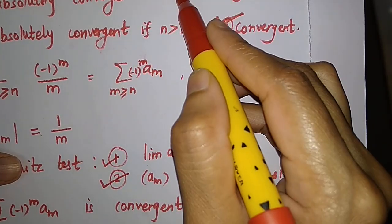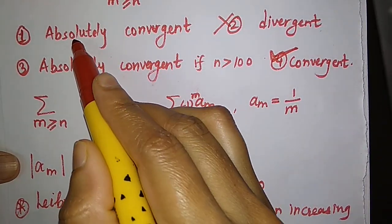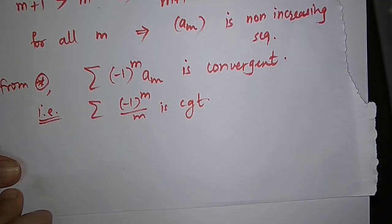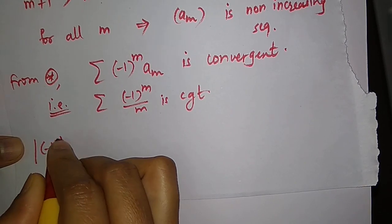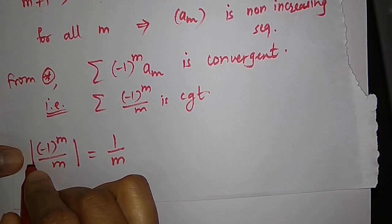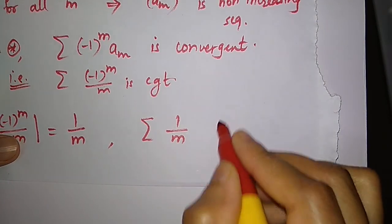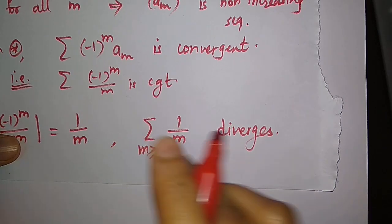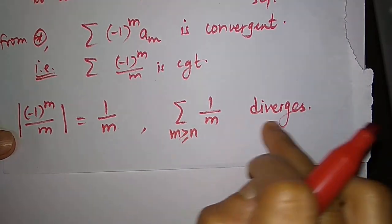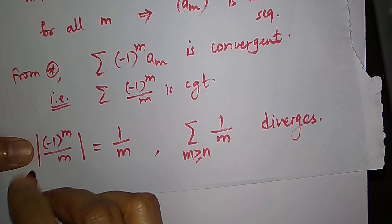Since the series is convergent, it cannot diverge, so the divergent option is false. Now we need to check whether it is absolutely convergent. Taking the modulus: |(-1)^m / m| = 1/m, since |(-1)^m| = 1 for any m. We know that the series sum of 1/m diverges, since it is a p-series with p = 1. So the series is not absolutely convergent.